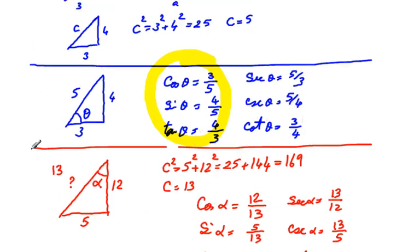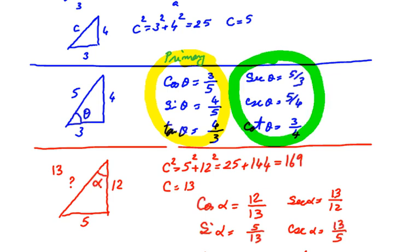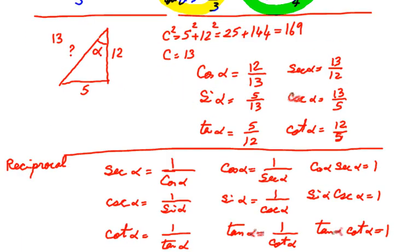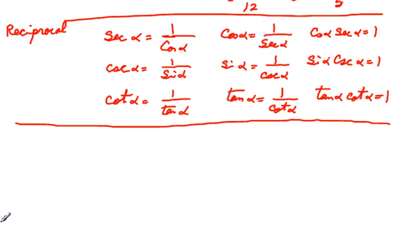We have these primary functions — sine, cosine, tangent — and then what you might call reciprocal functions: cosecant, secant, and cotangent. Make sure you know the difference between them. Then, last time we talked about some famous angles. There is a long list of famous angles, and one of the very famous theorems of geometry relates to this.